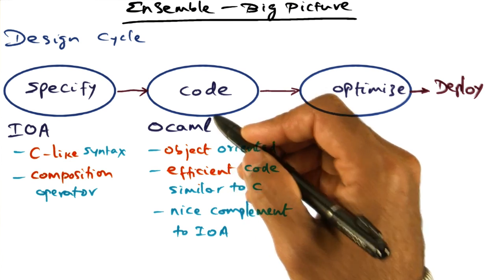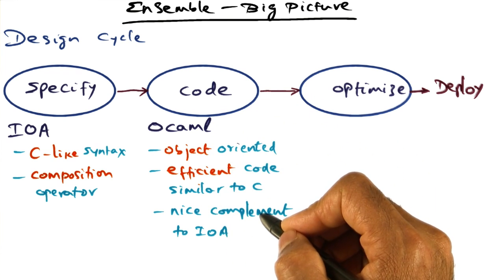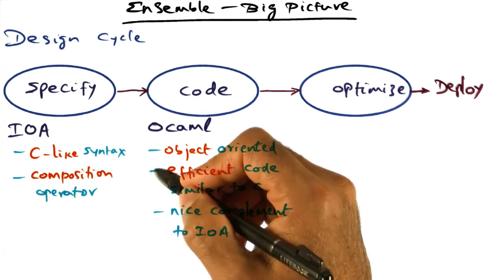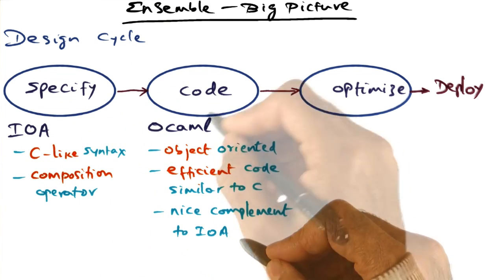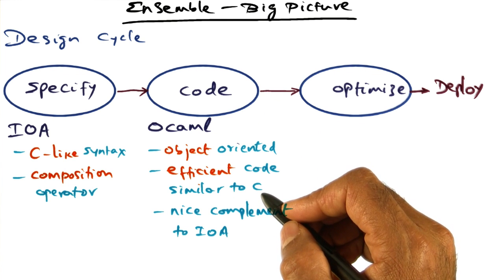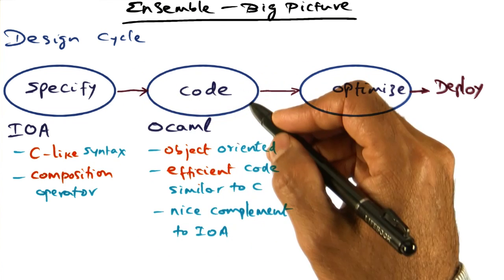Number one, the formal semantics that is available in OCaml is a nice complement to the specification that we have done using IO Automata. That's the first reason why OCaml is a good vehicle for converting the specification into code.